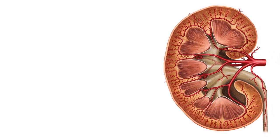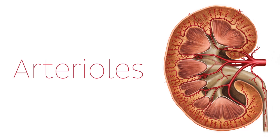They do this by branching off into arterioles, which are smaller in diameter and more numerous, and then into capillaries. This is the point where the arteries and veins merge with one another in a complex plexus of many tiny branches. This is also where the exchange of gases, nutrients, and waste products take place, because the capillary walls are thin and fenestrated.